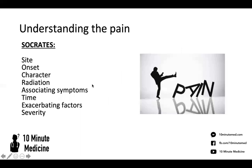So, understanding the pain. The first thing you need to do is recognize where the pain is coming from, and using SOCRATES is the best way to do that. You want to assess the site — where is it on their body? Is it chest pain, back pain, leg pain? You want to make sure that that site is a singular site and not numerous sites, which can sometimes happen in things like arthritis.